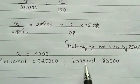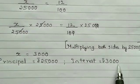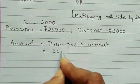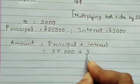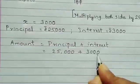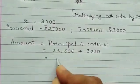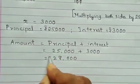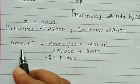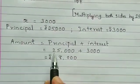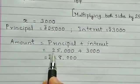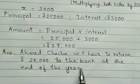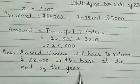We have principal as 25,000 rupees and interest as rupees 3,000. The amount is principal plus interest — that is 25,000 plus 3,000 — which equals 28,000. So rupees 28,000 is the total amount that Ahmad Chacha has to return to the bank at the end of one year.